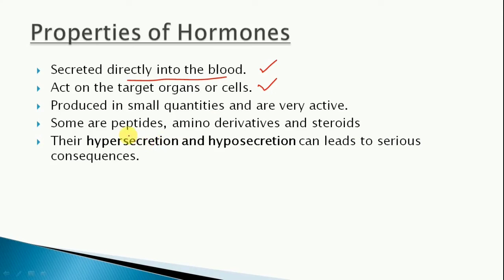Some hormones are peptides - peptides are proteins. So some hormones are proteins, while some are amino derivatives. Amino acid is the monomer unit of protein; amino acids join together to form peptides or proteins. Some hormones are made up of amino derivatives and some are steroids, which is another kind of molecule.